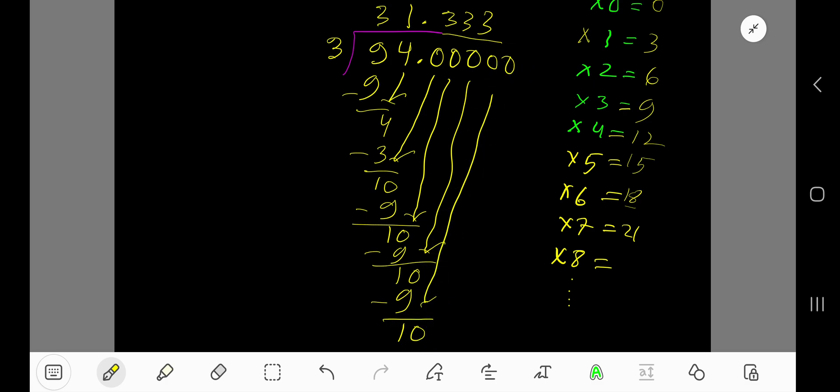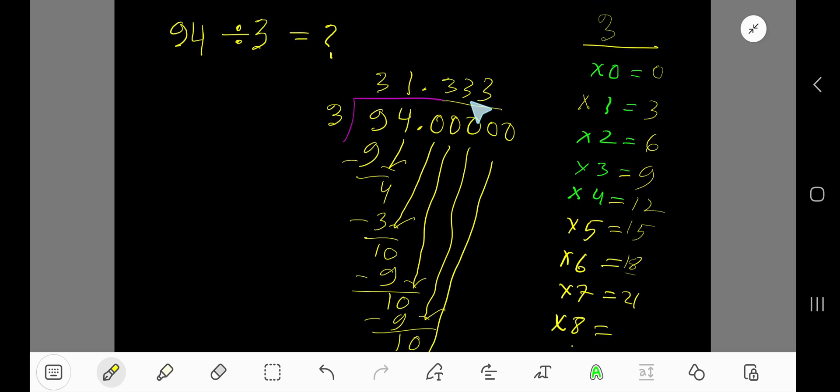Since we have gotten 3 digits after the decimal, we can add 3 dot. This means this process is continuing. But look, this 3 is repeating. We can put a bar over 3, so 31.3 bar is our answer.